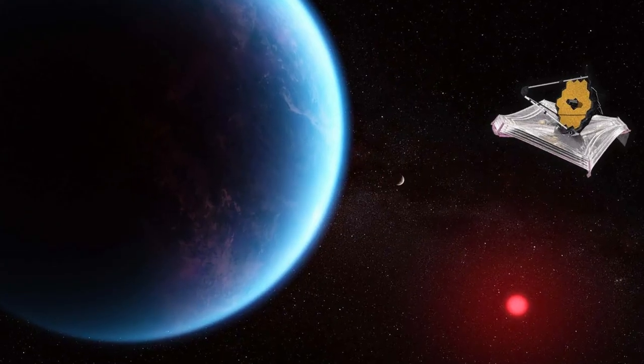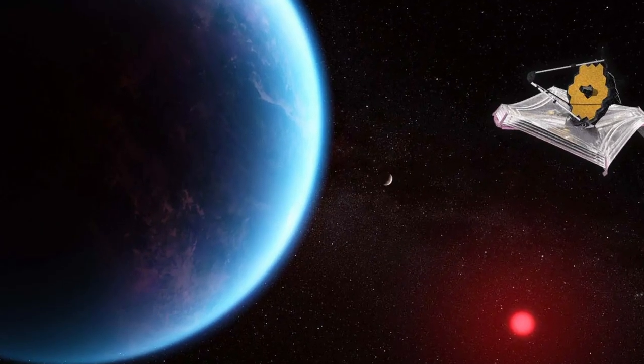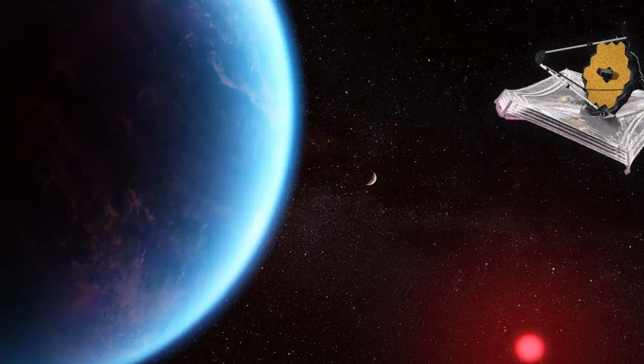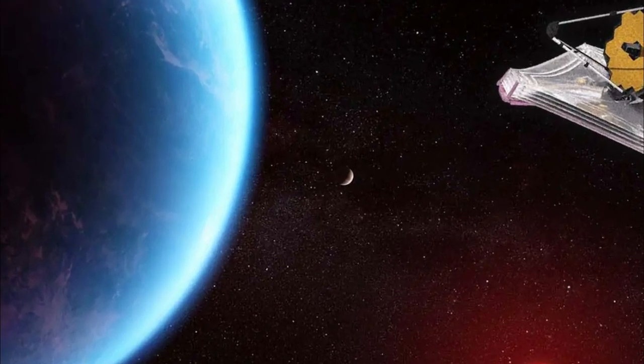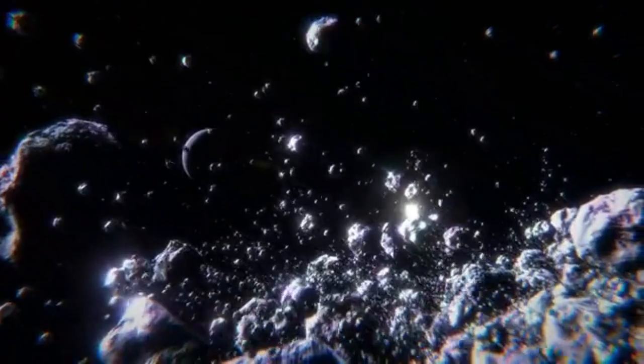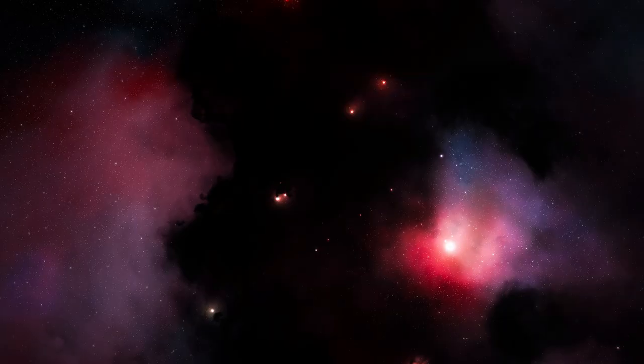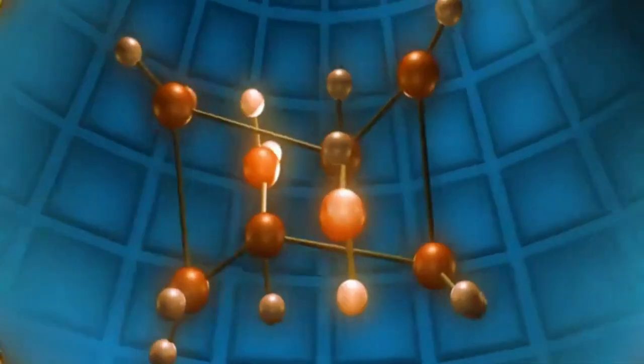The James Webb Space Telescope's precise capture of K218b's atmospheric spectrum has sparked excitement among scientists. Key chemical compounds, including methane, carbon dioxide, and notably, dimethyl sulfide, have been identified.